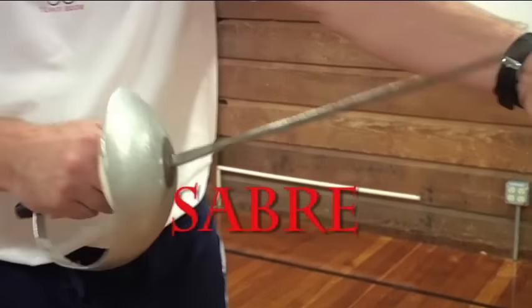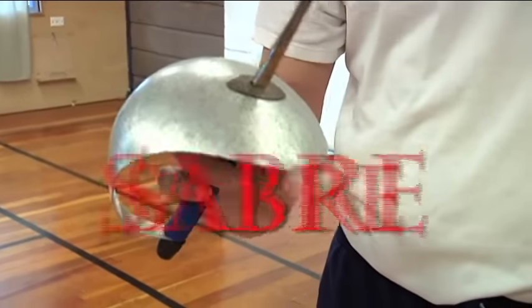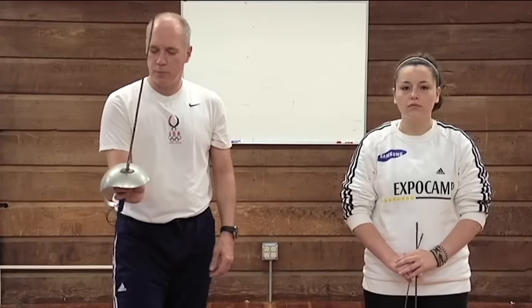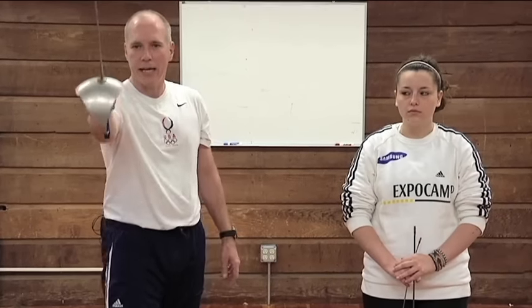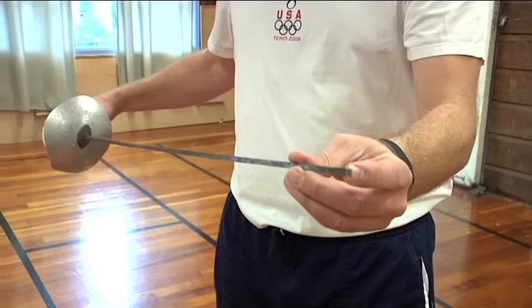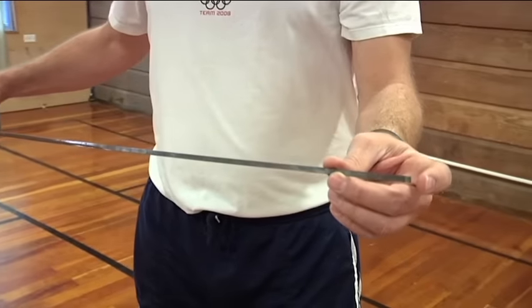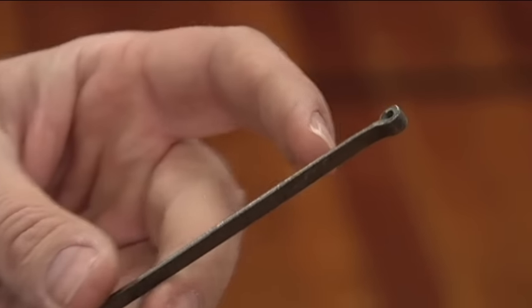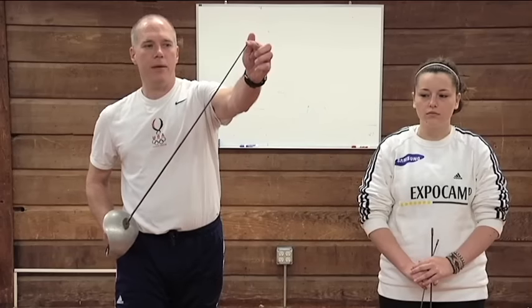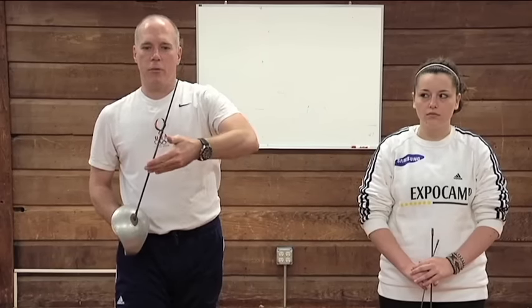The third weapon we want to use is called the saber. Now the saber is the only weapon in the sport of fencing that's actually a cutting weapon. If you look at the very end of the saber, unlike the foil and unlike the epee, it has no tip. You can score with the saber with the tip or the side of the weapon.